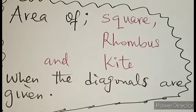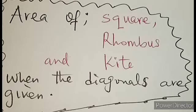Do not forget that is the formula for calculating the area of square, rhombus and kite when the diagonals are given.